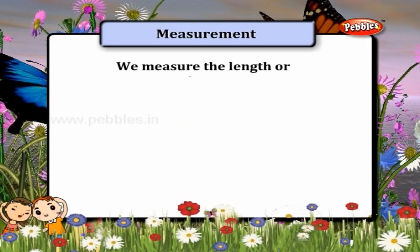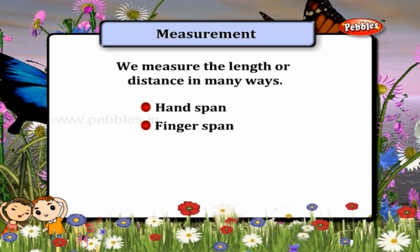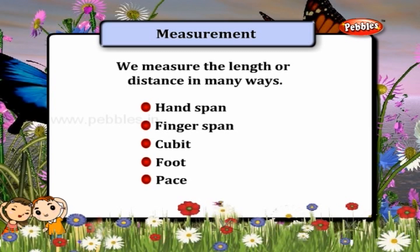We measure the length or distance in many ways: hand span, finger span, cubit, foot, and pace.